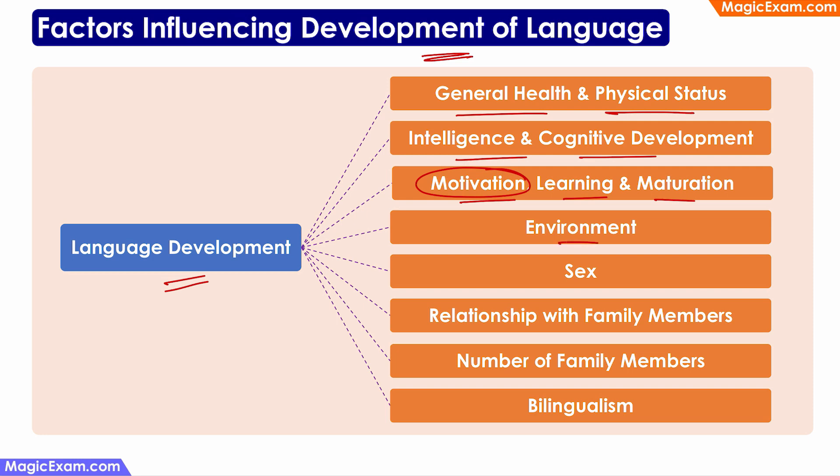Environment also plays a very important part, and sex of the child is also apparently important because some of the research shows that female children tend to pick up languages quite faster or better than male children.